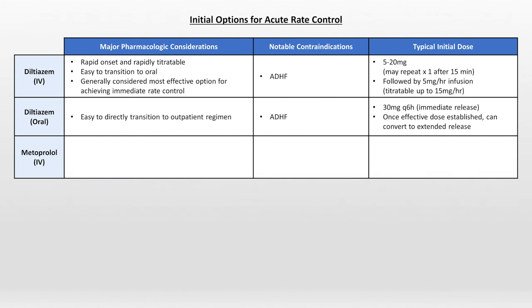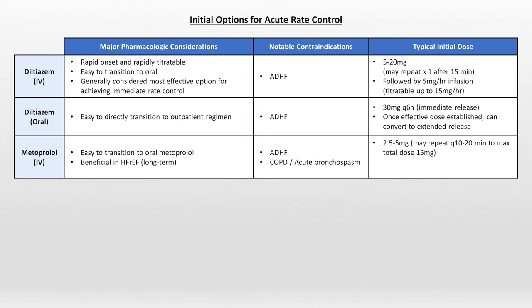Another option is IV metoprolol. It's easy to transition the patient to oral metoprolol, and in the long term it's beneficial for patients with heart failure with reduced ejection fraction, previously known as systolic heart failure. In the short term, however, it is contraindicated in acute decompensated heart failure. Also, as a beta blocker, it is relatively contraindicated in patients with COPD or acute bronchospasm. Typical initial doses are 2.5 to 5 mg, which can be repeated every 10 to 20 minutes to a max total dose of 15. Once heart rate is successfully lowered, it can be converted immediately to oral metoprolol, or given as IV Q6 if the patient is unable to take oral medications.